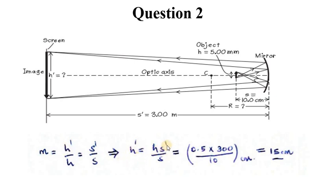This implies that H prime is H times S prime over S. We insert these values: H is 0.5 centimeters from 5.0 millimeters. We have 0.5 times 300 over 10 giving us 15 centimeters. That's H prime for us.